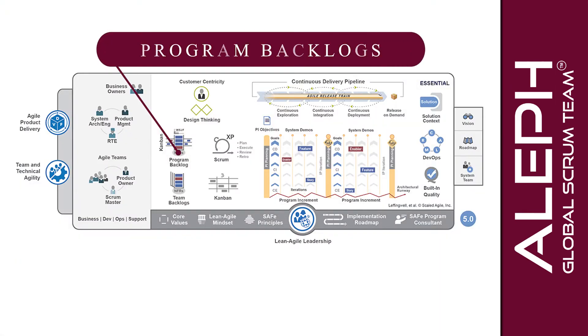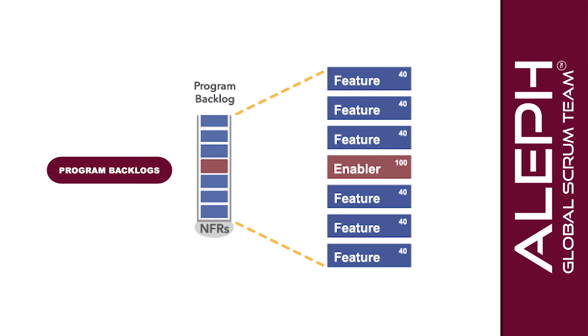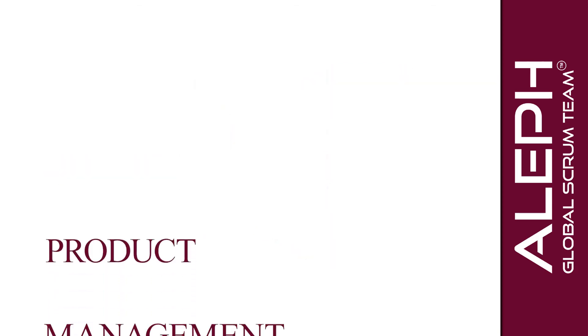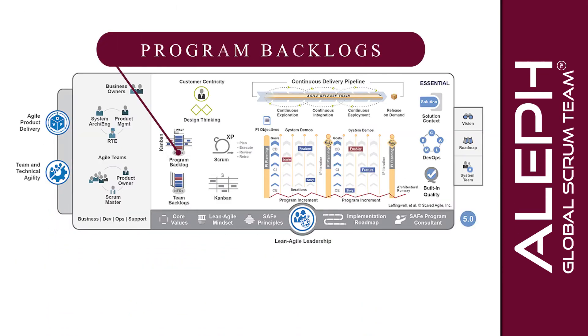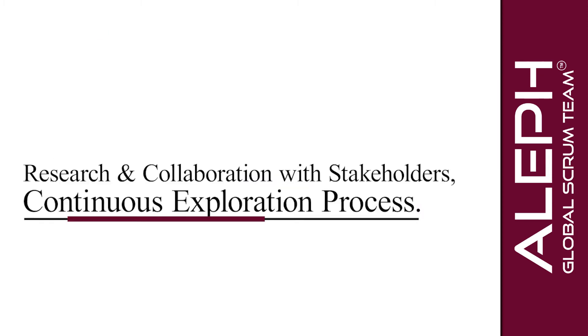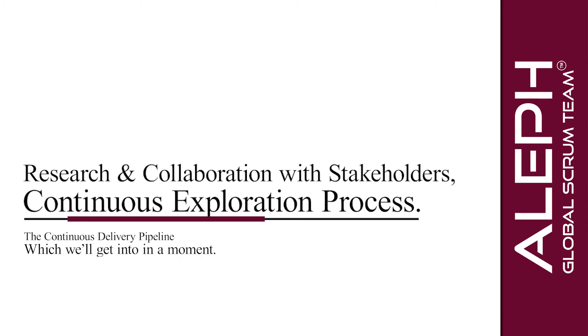Program backlogs are holding areas for upcoming features, addressing user needs and delivering business benefits for a single ART. Product management has responsibility over the program backlog, ensuring the items result from research and collaboration with stakeholders, as part of the continuous exploration process — part of the continuous delivery pipeline development, which we'll get into in a moment.